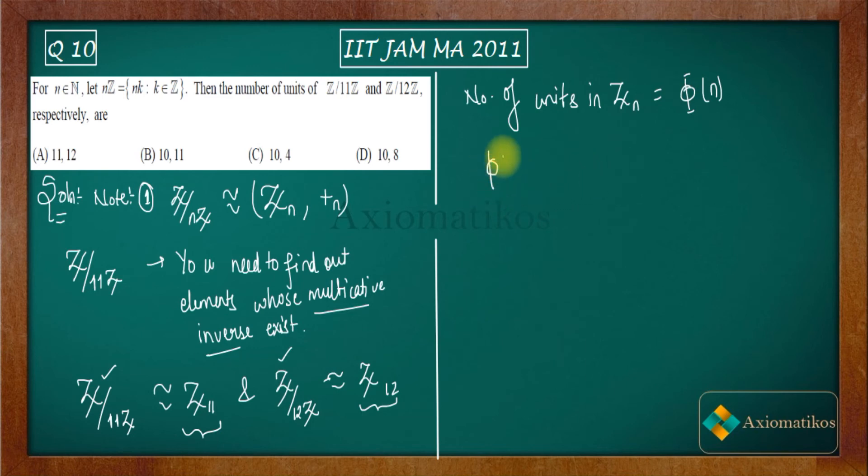So phi of 11 you have to calculate. Since it's a prime, you will get 10. Now phi of 12 can be written as phi of 2² times 3, which can be written as 2² minus 2¹, so what you will get is 4 minus 2, that's 4.